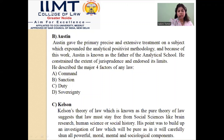The third propounder was Kelsen. Kelsen's theory of law, which later came to be known as the pure theory of law, suggests that law must be free from all the social sciences, like psychology, sociology, and social history. His point was to develop an investigation of law that would be pure, carefully shunning all moral, mental, and sociological influences. He wanted to isolate law and not equate it with other social science subjects such as history, political science, and sociology.